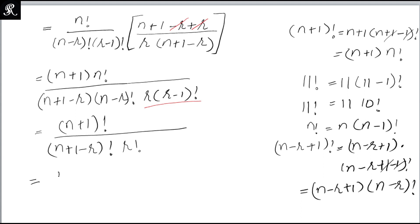This is equal to (n+1)Cr, because expanding the formula (n+1)Cr gives (n+1) factorial divided by (n+1 minus r) factorial into r factorial. This means the left hand side is equal to the right hand side, so this was the proof of this identity.